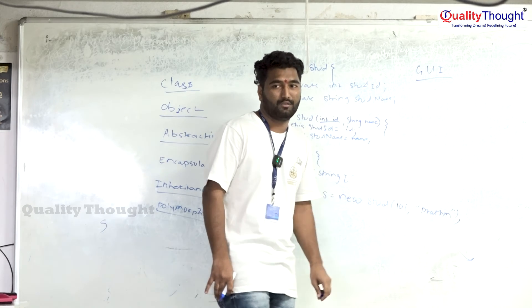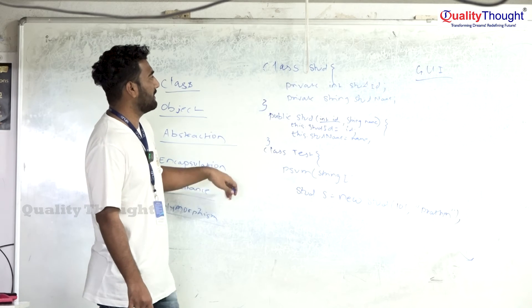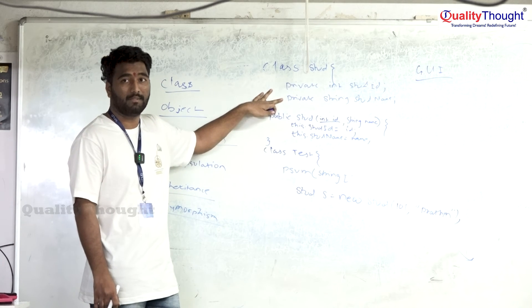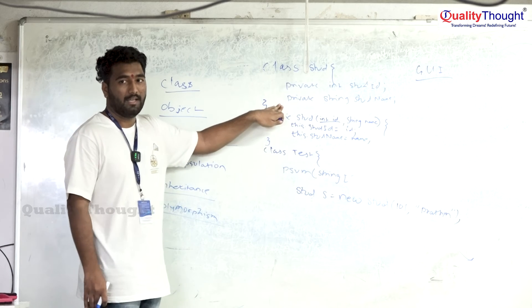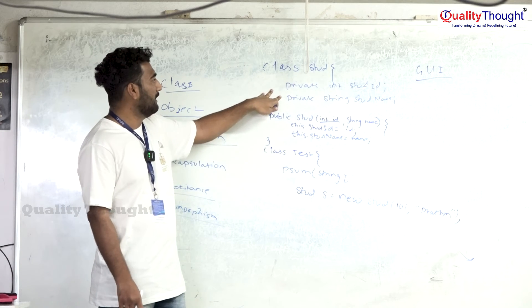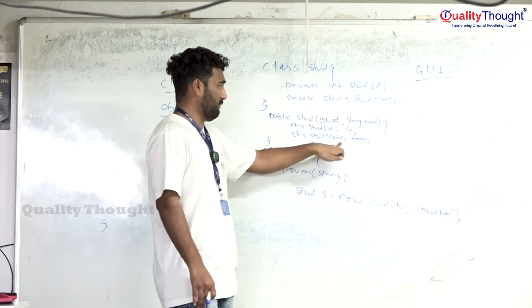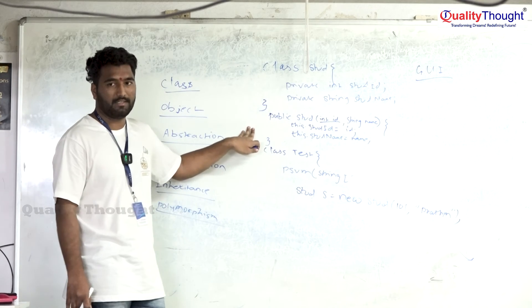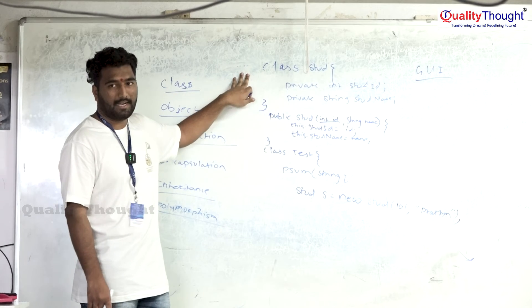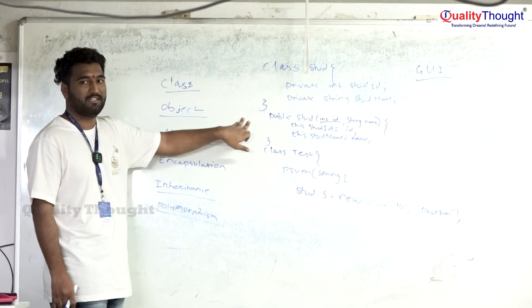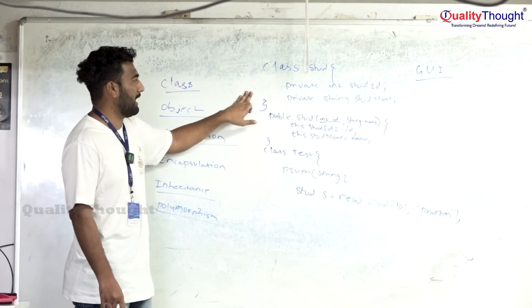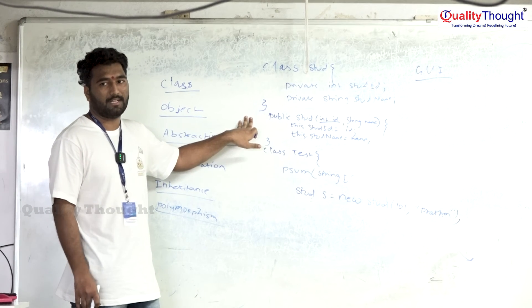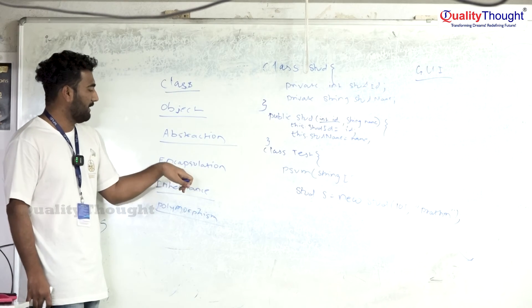Encapsulation means encapsulating the data — we have data members like `private int studentID` and `private String studentName`. If you want to print this data, you declare a method like `public void methodName()` with `System.out.println`. So binding the data variables and related methods which are associated with the data members in the same class is called encapsulation. Both encapsulation and abstraction provide similar advantages: data hiding, security, and reusability.